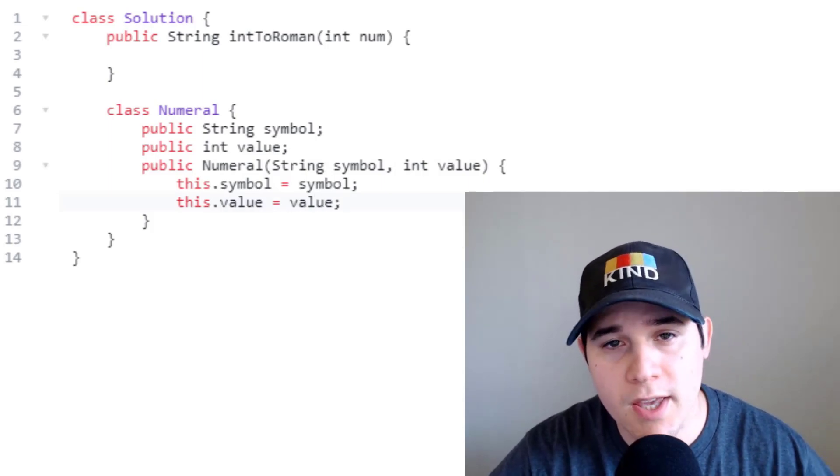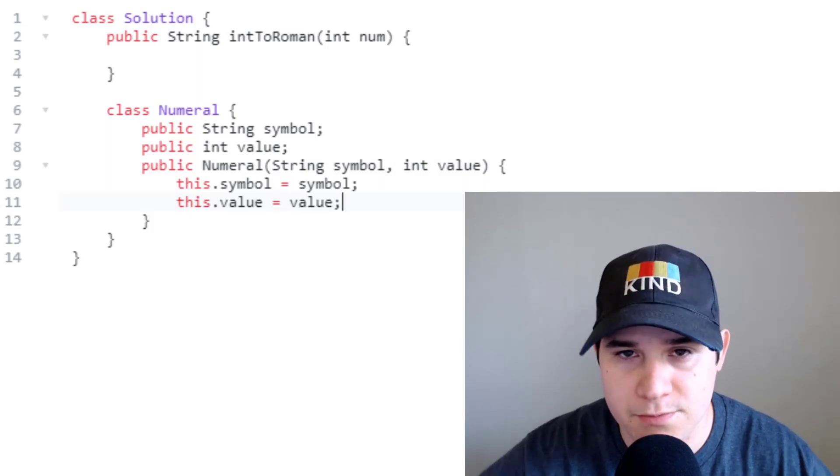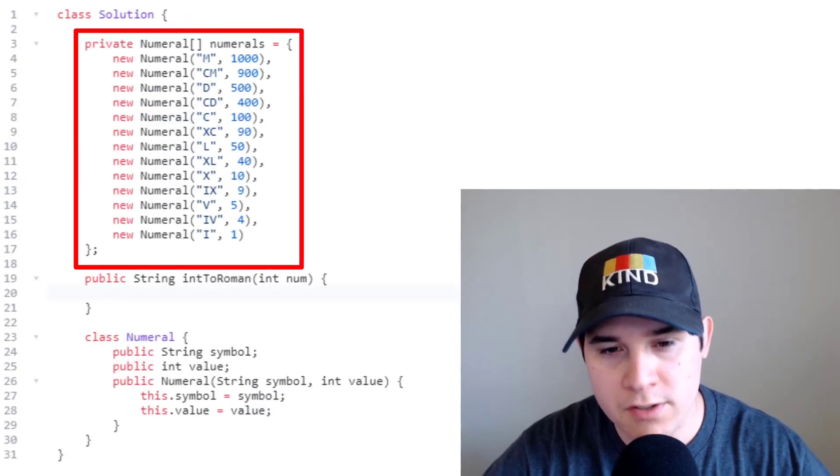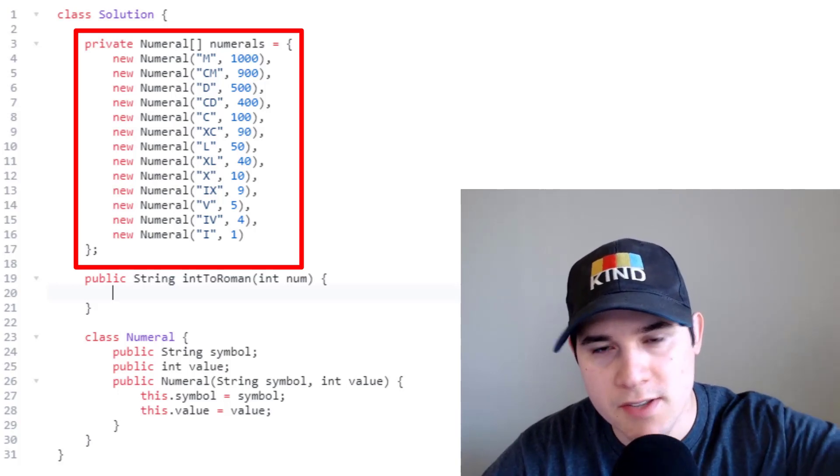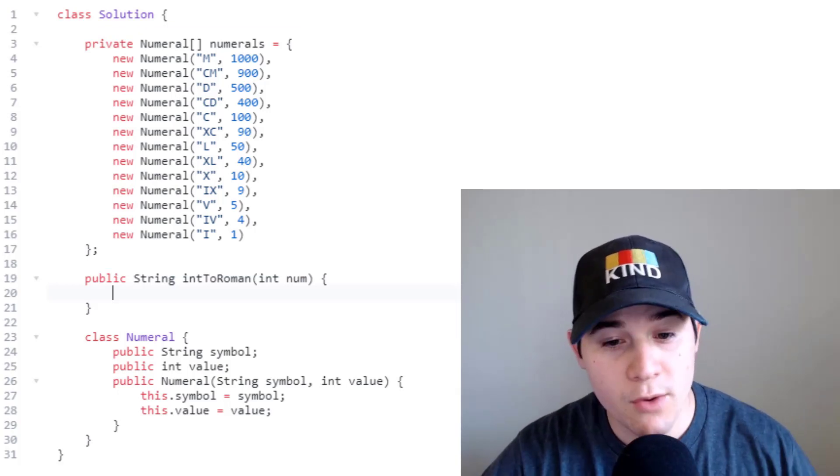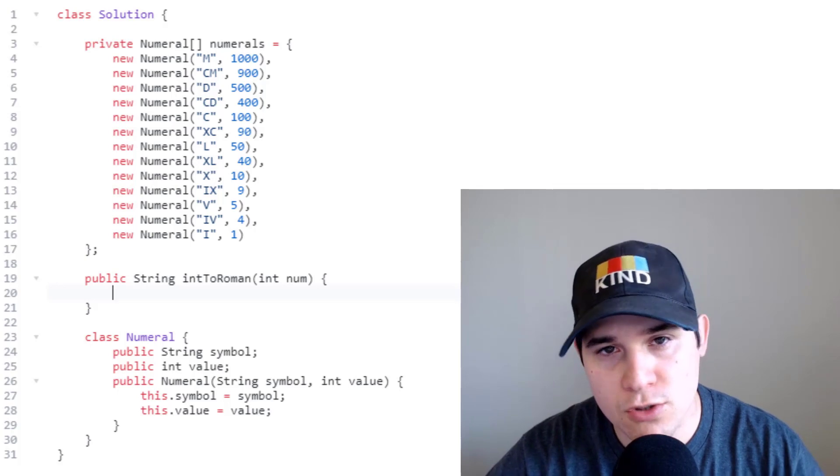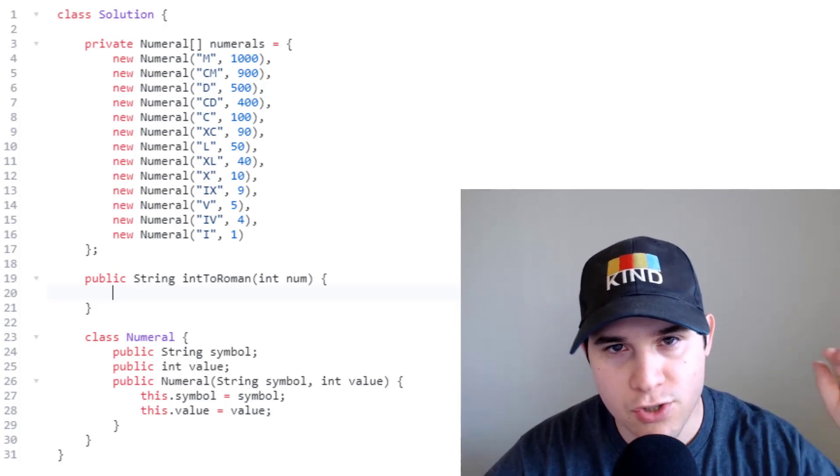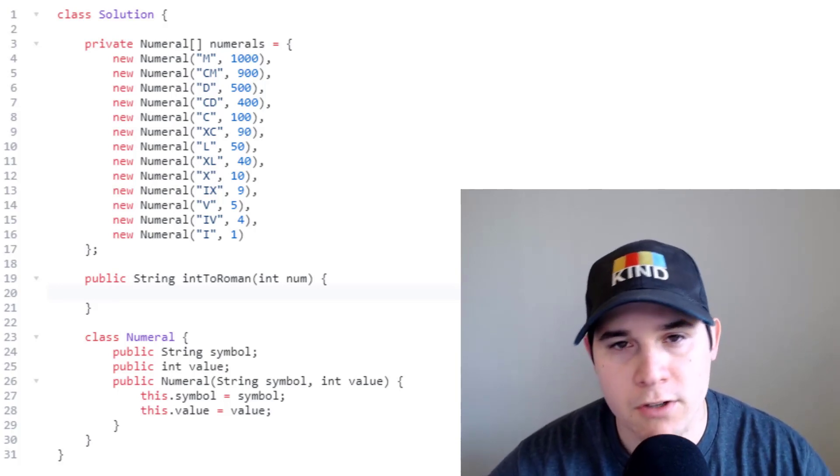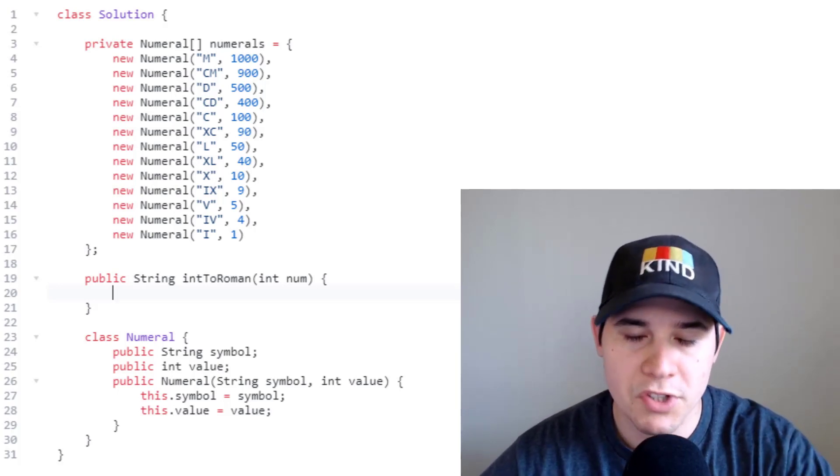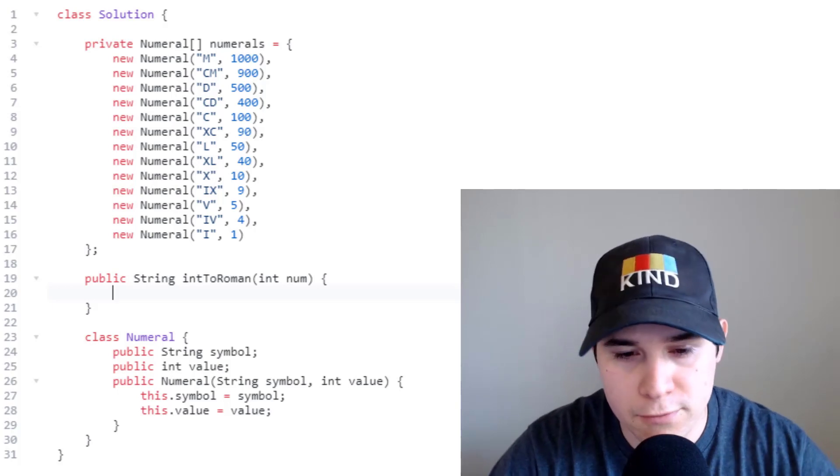Now that we've created this class we can generate all of our pairs. So I've written out all of the numeral pairs. So we have a numeral array and it always starts with the biggest and goes down to the smallest. So that way when we're implementing this intToRoman function all we need to do is loop over this numerals array from start to finish. Now that we have all of our conversions readily available we just need to implement this intToRoman function.